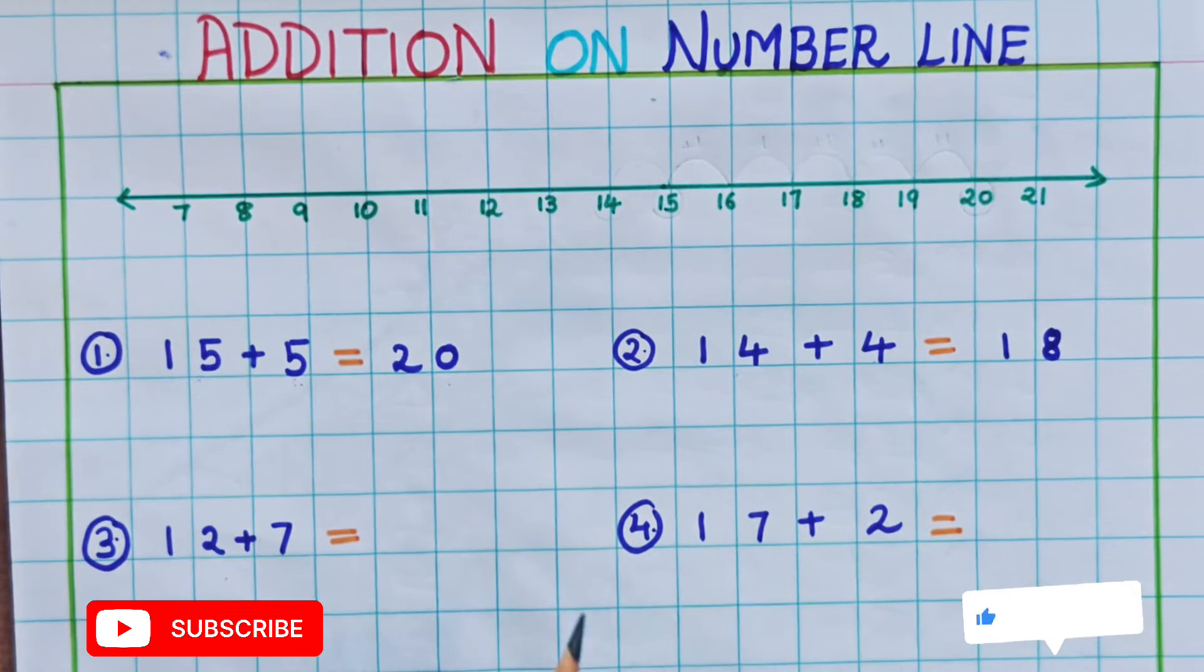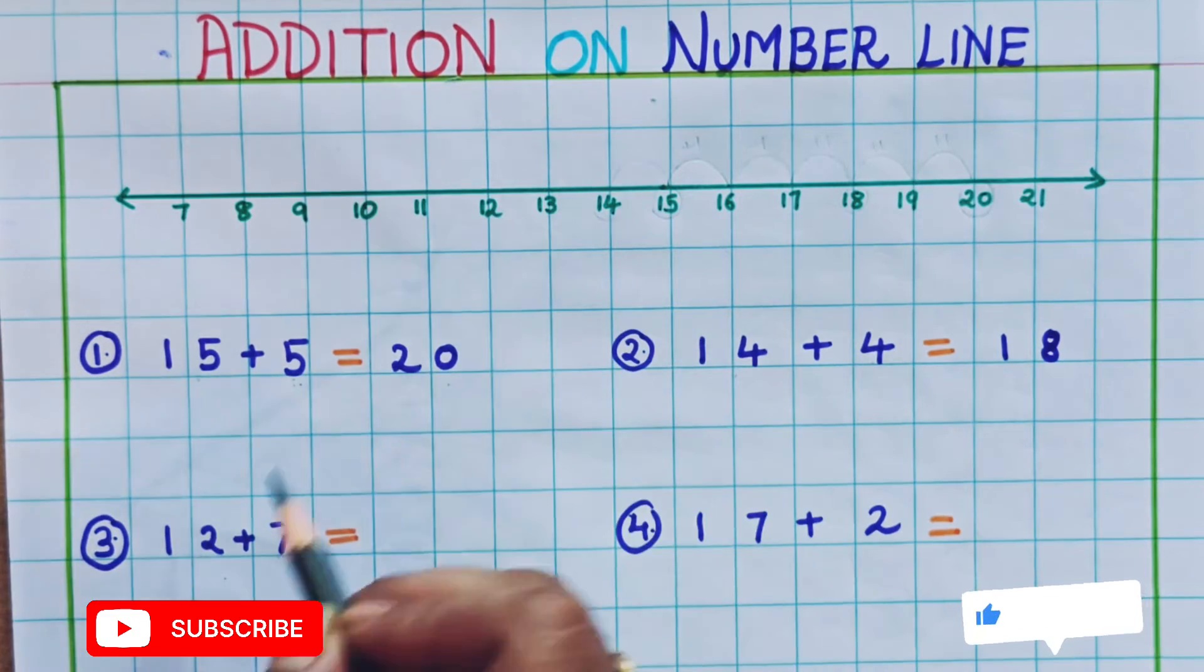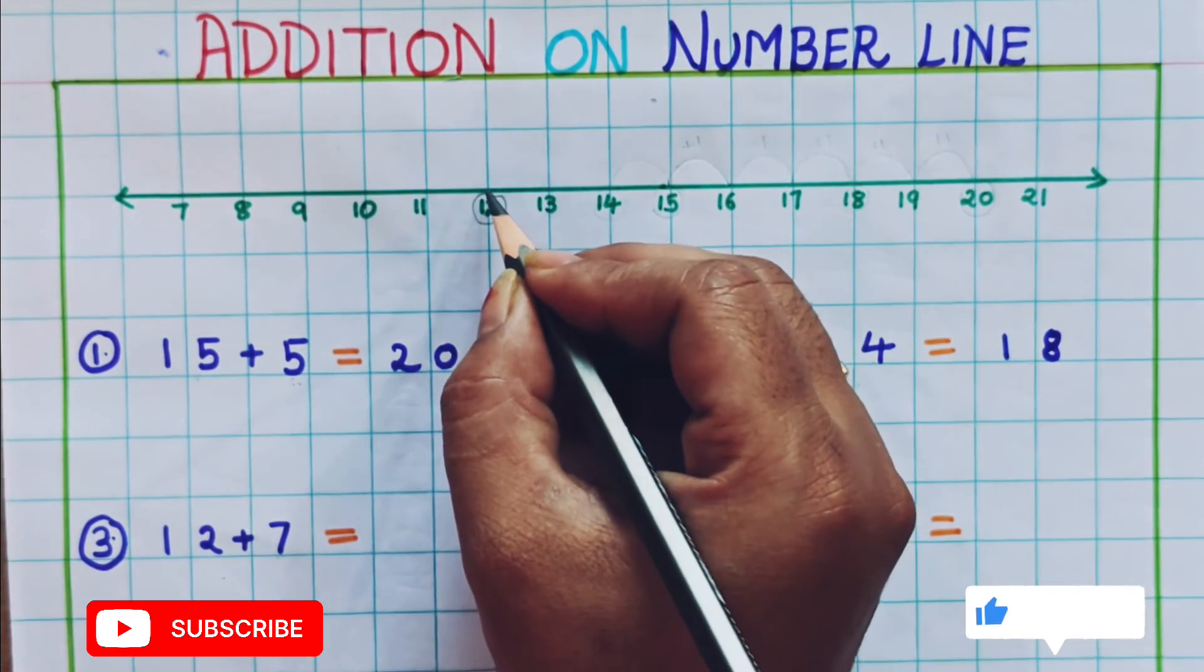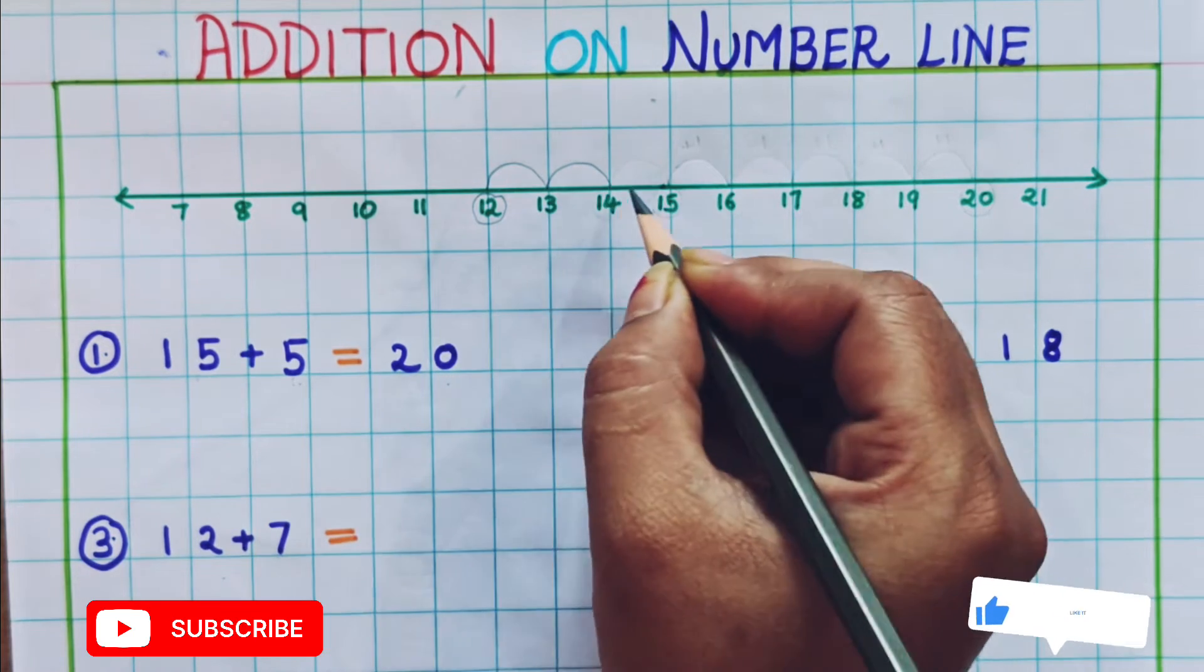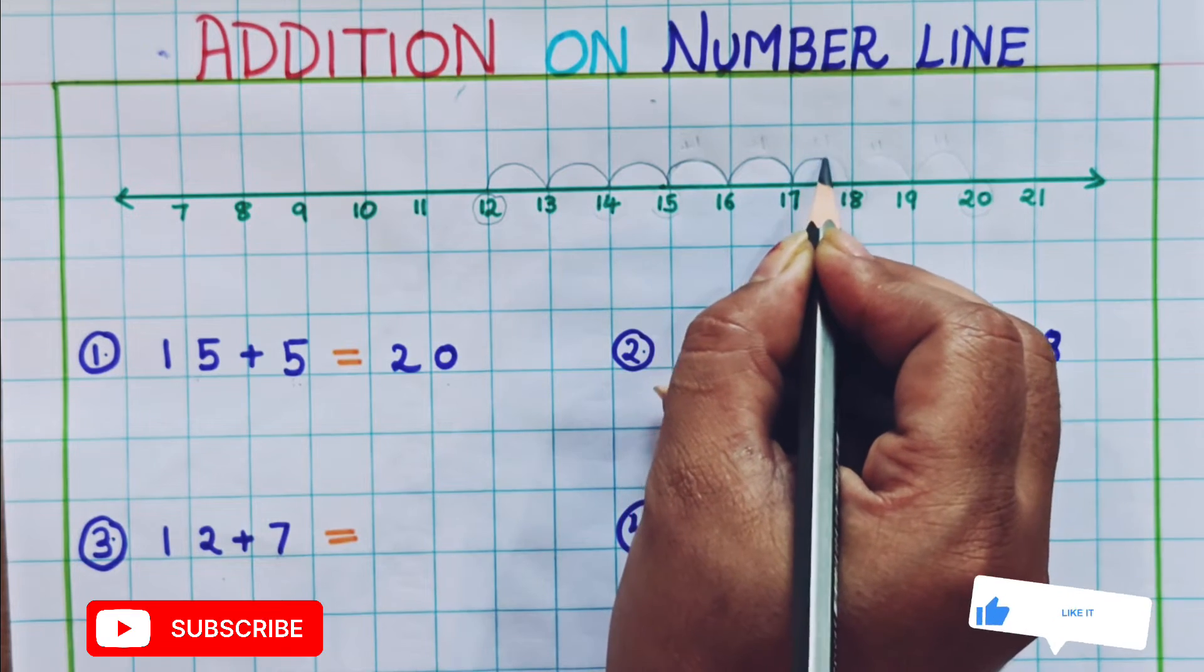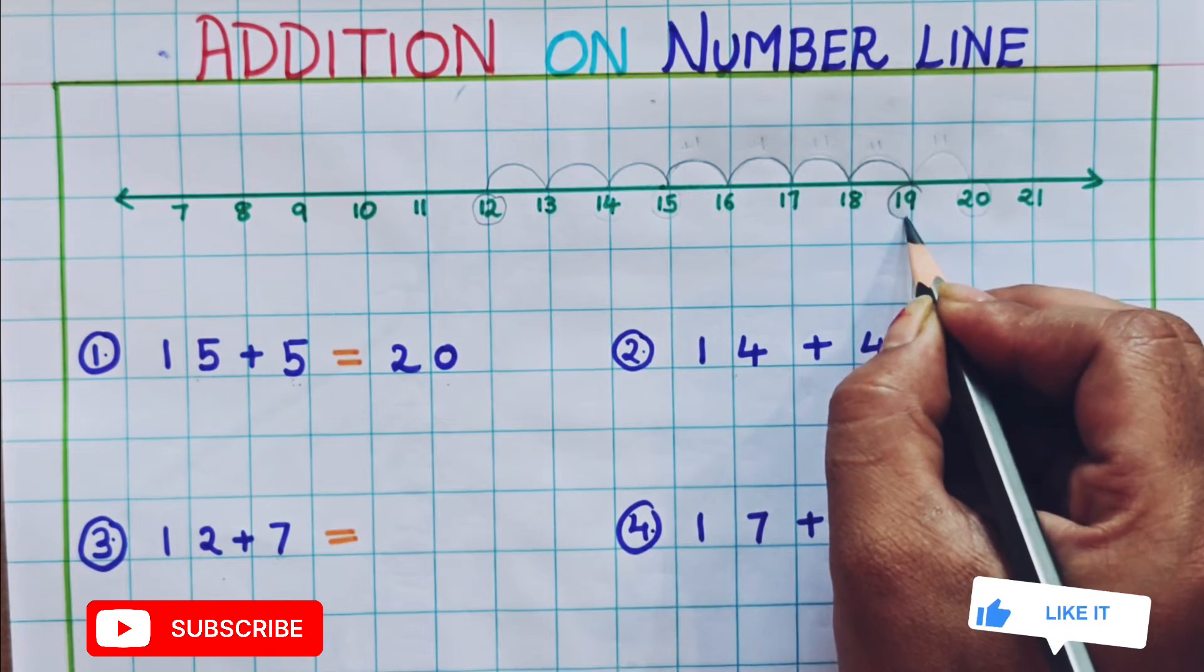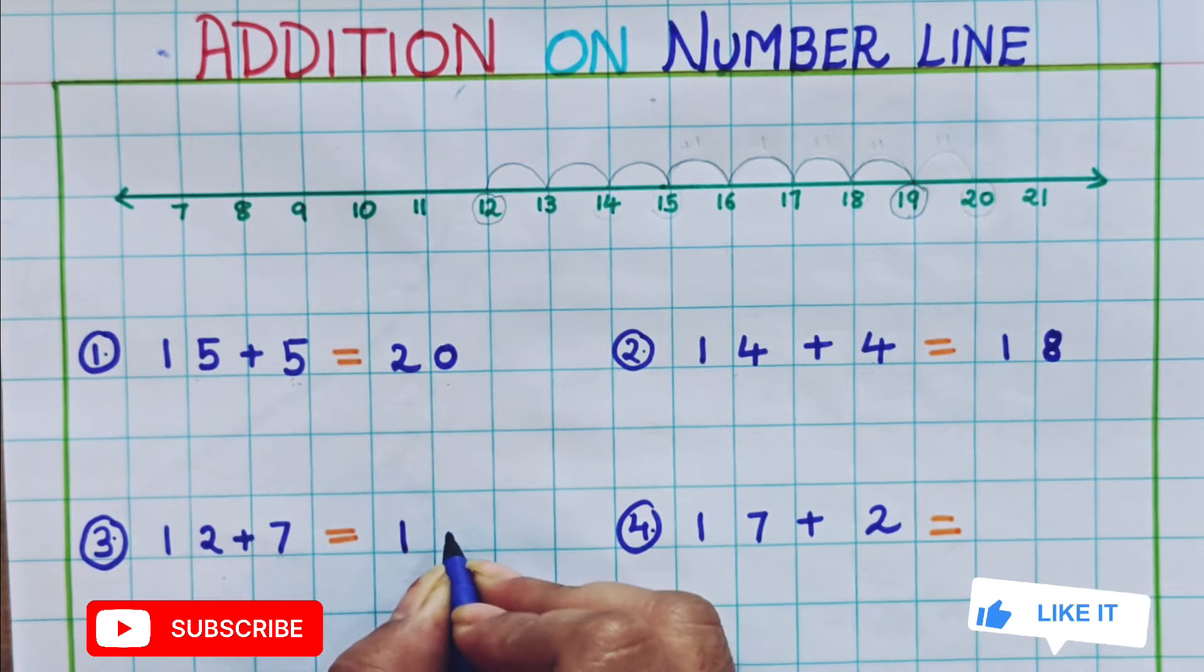Now let's see the next problem. 12 plus 7. So what we have to do first? We have to look at 12. Here this is 12. Plus 7 means how many steps we have to take forward? 7 steps. Let's see. 1, 2, 3, 4, 5, 6 and 7. What is the number we are getting? 19. So what is the answer of 12 plus 7? The answer is 19.